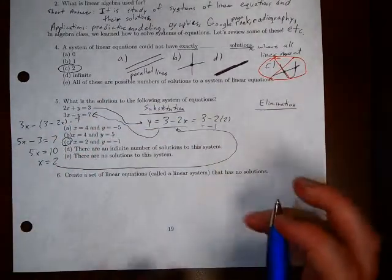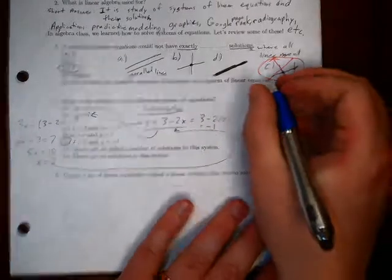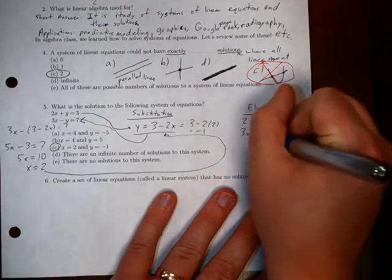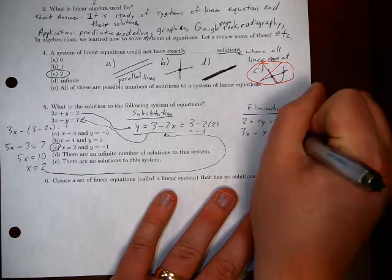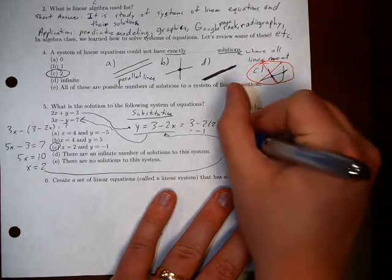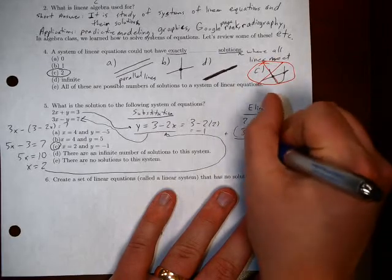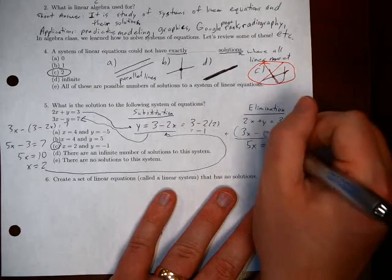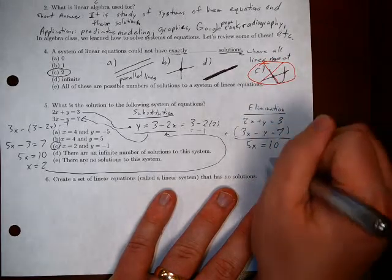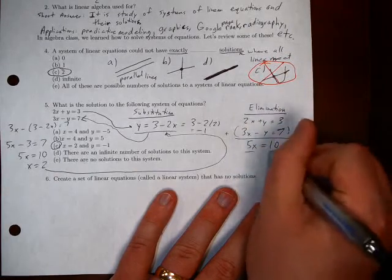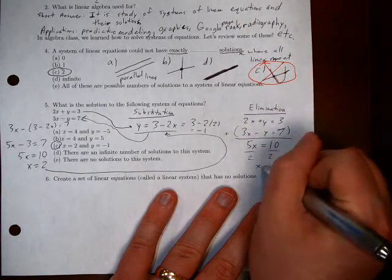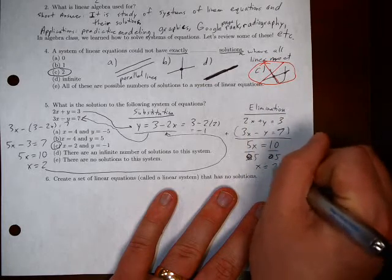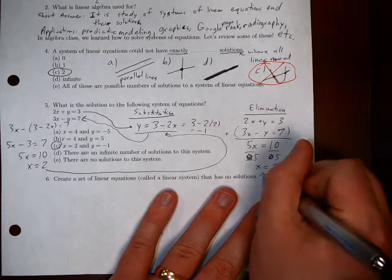We also can do something called elimination, where we try to get rid of one of our variables. So if we take 2x plus y equals 3, and 3x minus y equals 7. If we add these equations together, we get 5x equals 10. So 2x plus 3x equals 5x, y minus y is 0, and 3 plus 7 is 10. And then from here, divide by 5, getting ahead of myself, and x equals 2, and then can substitute from there.